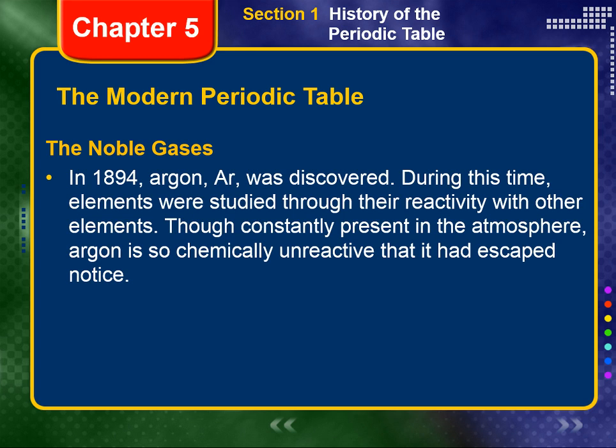Perhaps the most significant addition to the periodic table came with the discovery of the noble gases. In 1894, English physicist John William Strutt, also known as Lord Rayleigh, and the Scottish chemist Sir William Ramsay discovered argon, AR, which is a gas in the atmosphere that had previously escaped notice because of its total lack of chemical reactivity.